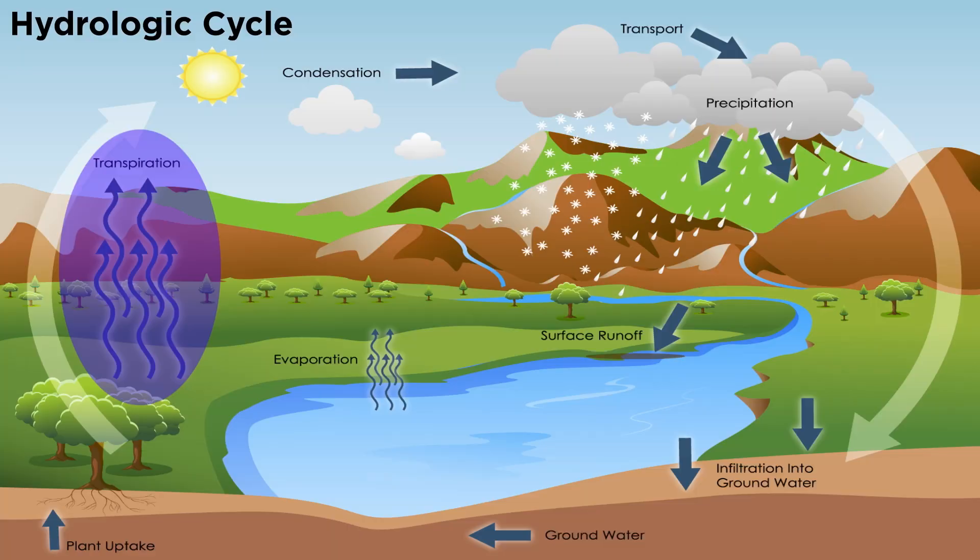Through transpiration, as we mentioned earlier, plants move water from the soil to their roots, through their structures, and then back into the atmosphere, where water rejoins the hydrologic cycle.